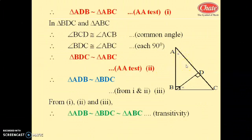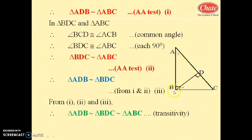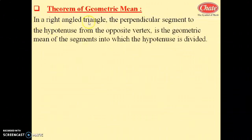From equations 1, 2, and 3, triangle ADB is similar to triangle BDC is similar to triangle ABC by transitivity. This is similarity in right angle triangle. You have to remember this statement: in a right angle triangle, the perpendicular to the hypotenuse from the opposite vertex is the geometric mean of the segments into which the hypotenuse is divided.